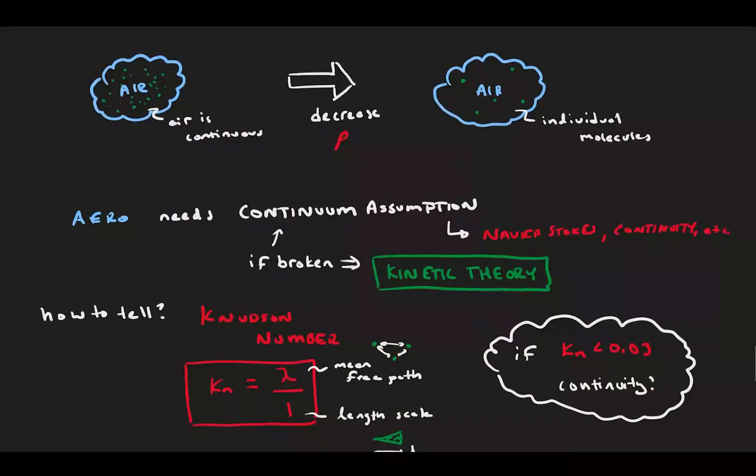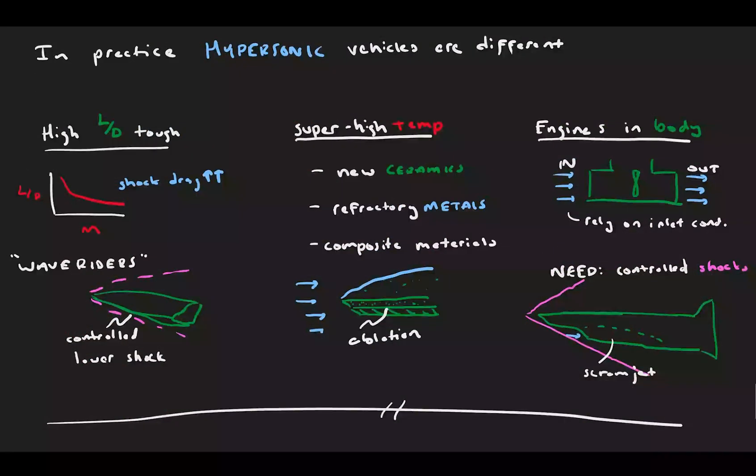Finally, in high-altitude, low-density flows, we need to consider the Knudsen number to determine if our continuous assumption is broken. This leads to large differences in vehicle design compared to subsonic and supersonic travel, with the invention of vehicles like the wave rider, high-temperature materials, and vehicle designs that create very predictable and controlled shock structure.